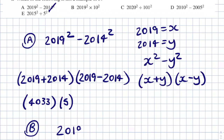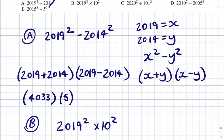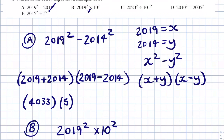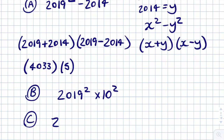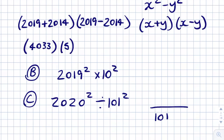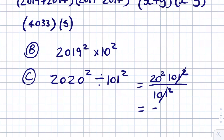Looking at B: 2019 squared times 10 squared. Because 2019 squared is multiplied by 100, and 100 is a multiple of 5, B cannot be our answer. For C: 2020 squared divided by 101 squared. Rewriting as a fraction, 101 squared is a factor of 2020 squared. Writing 101 squared on top and multiplying by 20 squared gives 2020. The 101 squareds cancel out, leaving 20 squared. Since 20 is a multiple of 5, answer C is not our answer.